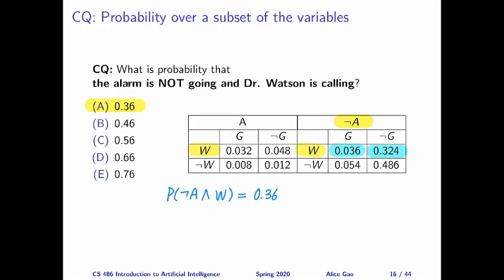But in mathematical terms, it looks like probability of not A and W is equal to the probability of not A and W and G plus the probability of not A and W and not G.